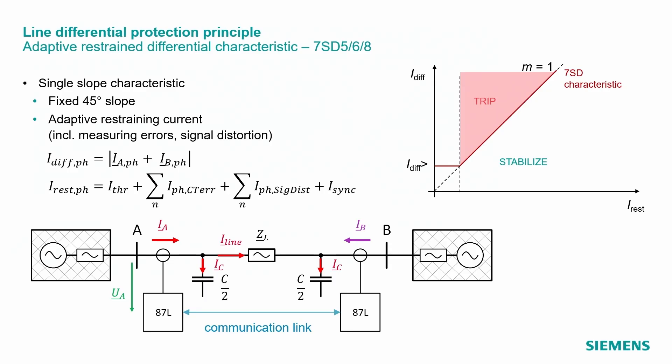The ZProtek 7SD series, so the ZProtek 4 and ZProtek 5 series, use a different restraining current calculation, shown here, which takes into account the CT errors already. The adaptive restrained current calculations considered also the effects of a signal distortion and time differences in a communication channel. I will explain this a bit later.